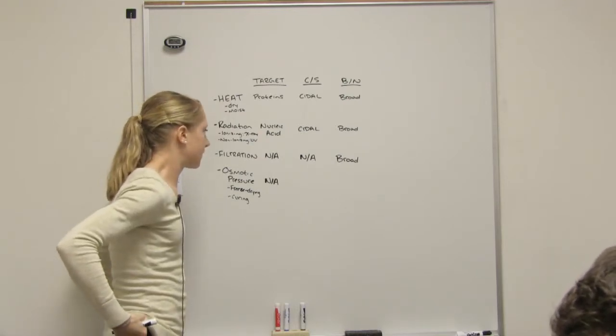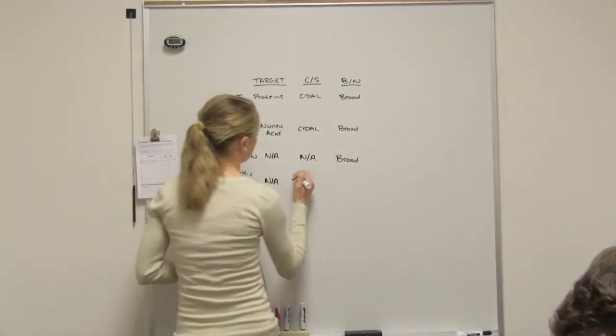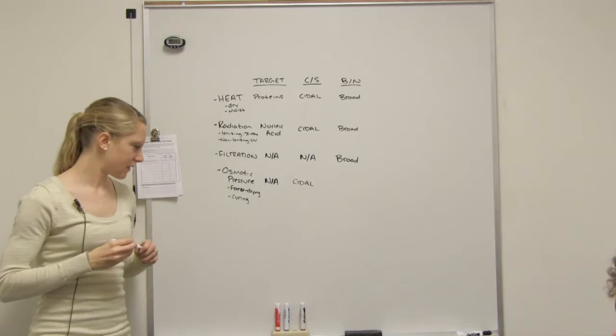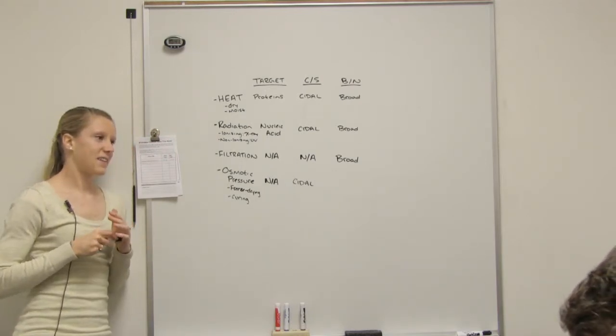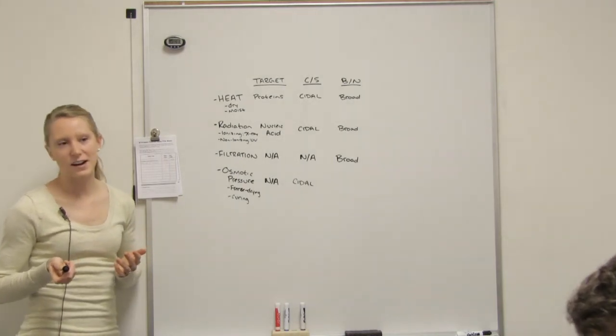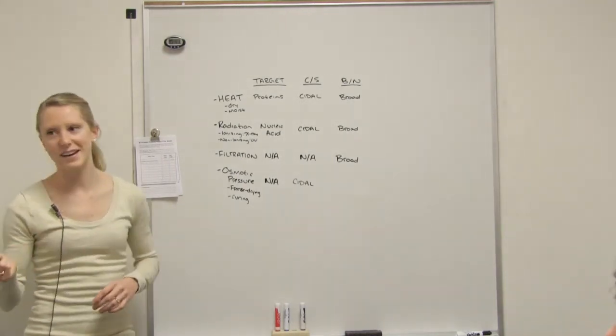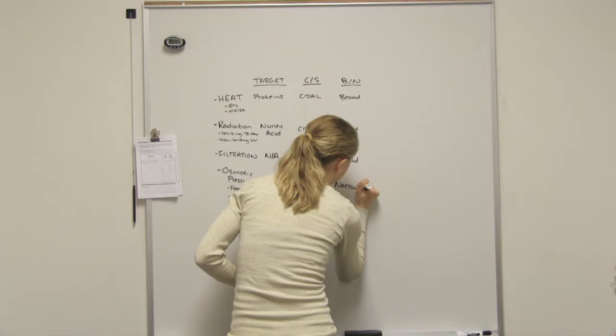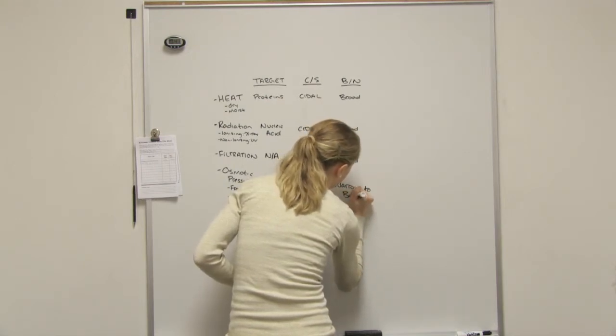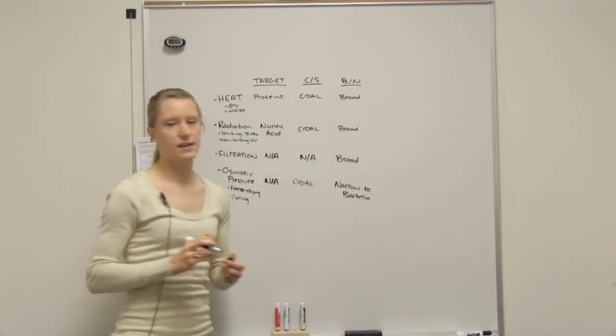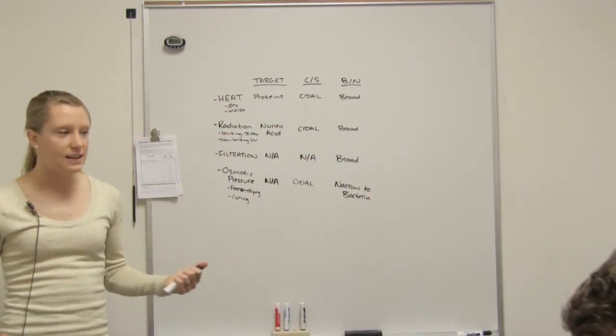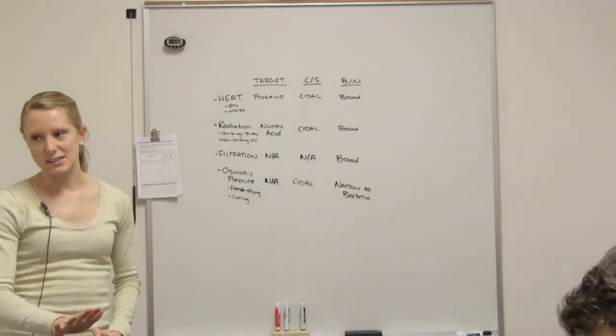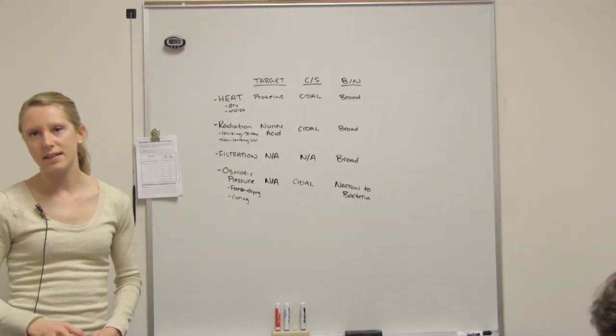Cidal or static? Cidal. It kills them if they don't have water. Broad or narrow? Narrow. Why do you say narrow? Because viruses don't care. Yeah, viruses don't have osmotic pressure. They don't care how much water they have. They're like dirt, really. So whenever you say narrow, it's not good enough to say narrow. You have to say narrow to bacteria because it only affects bacteria. It doesn't affect viruses. So on your test, if he gave osmotic pressure changes as a way to kill something, it would only work against your bacterial diseases, it wouldn't work against your viral diseases.